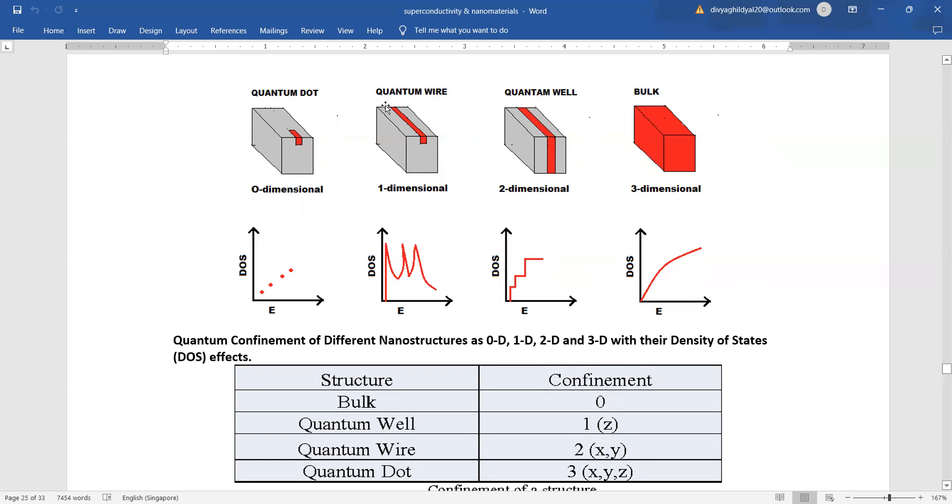When it comes as a wire, the confinement is two-dimensional. Wire is one-dimensional, quantum well is two-dimensional, bulk is three-dimensional and quantum dot is zero-dimensional. The plot for density of states for these four cases comes as follows.